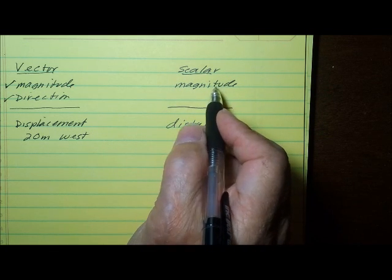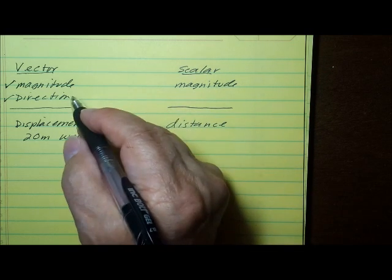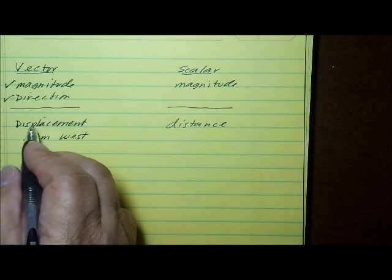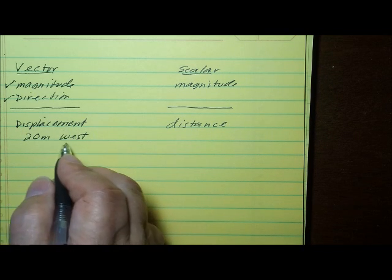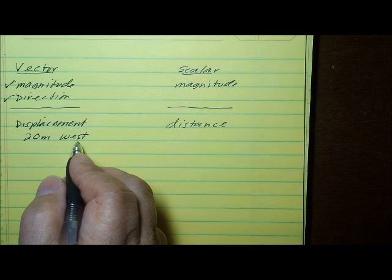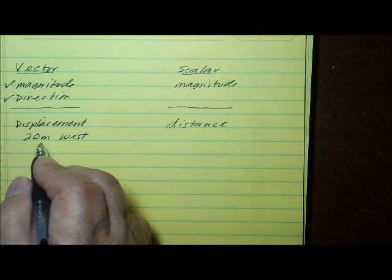Some examples of vector measurements might be displacement. Displacement is a vector because it has a direction. So an example of a displacement would be 20 meters west.